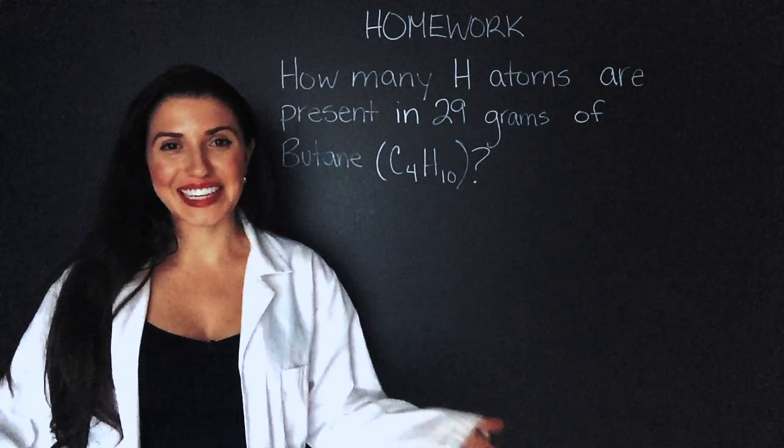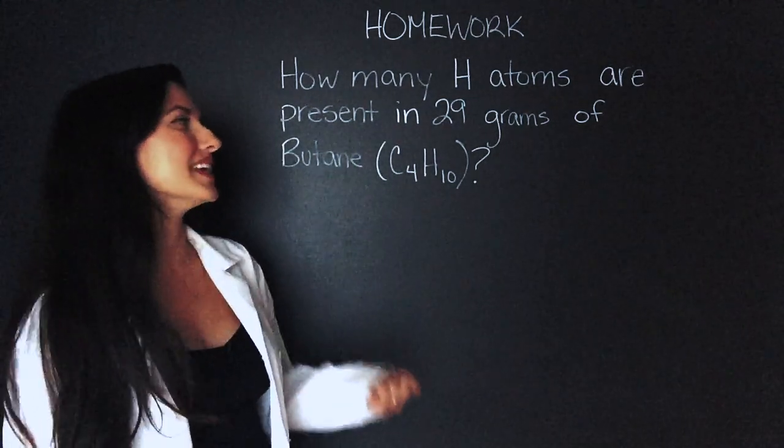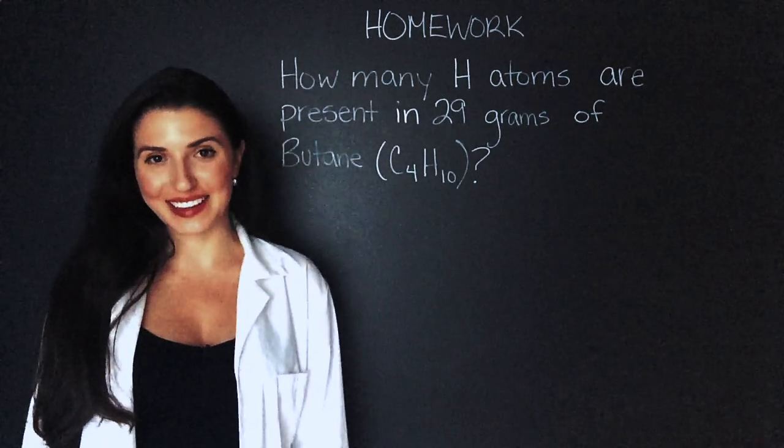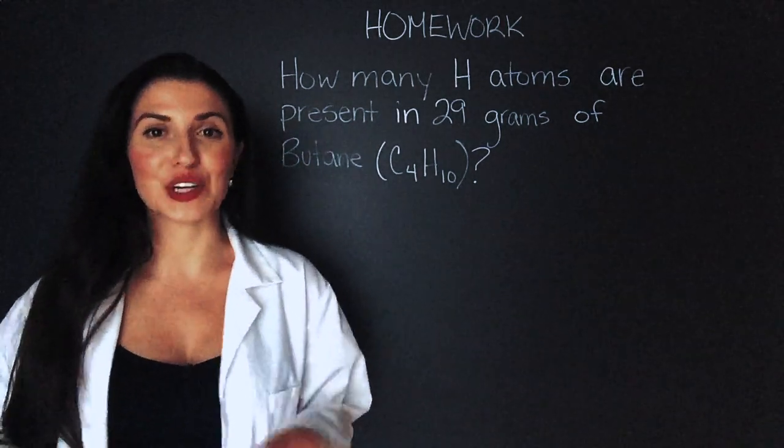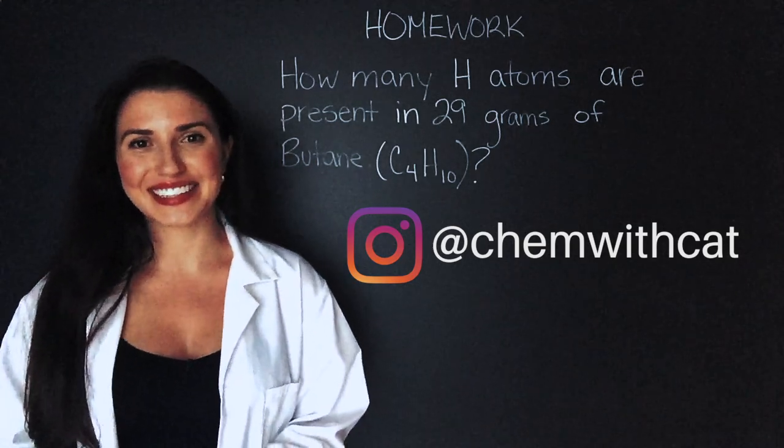All right, everyone, we did it. Today's homework question is how many hydrogen atoms are present in 29 grams of butane C4H10? Try to solve it on your own and then go to my Instagram page at chemwithkat to find the answer. Thanks for watching, guys. If you learned something today, make sure you like this video and smash that subscribe button.